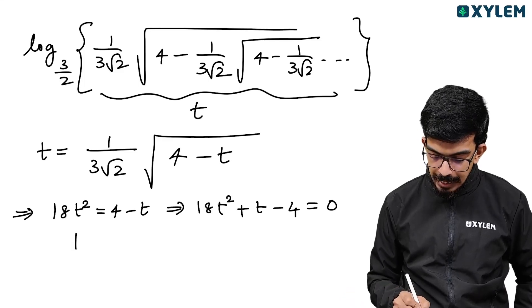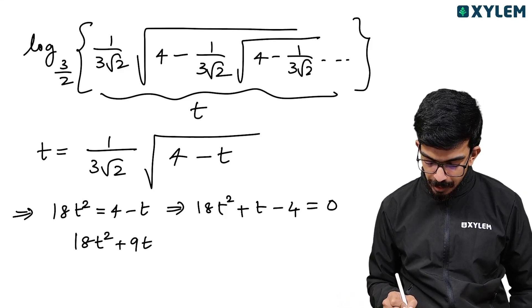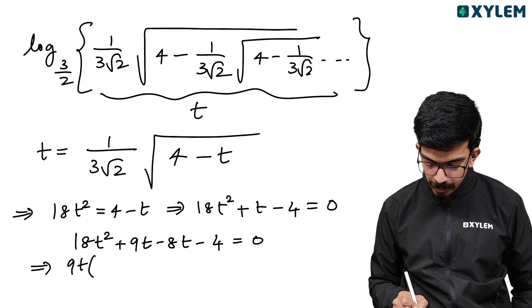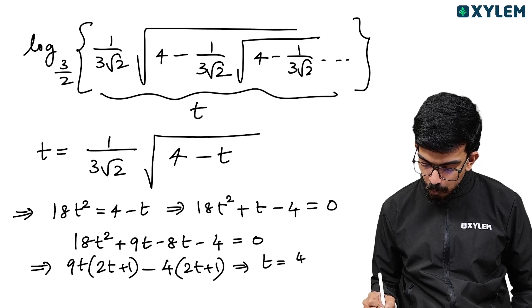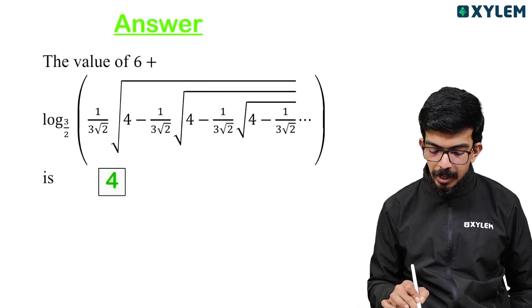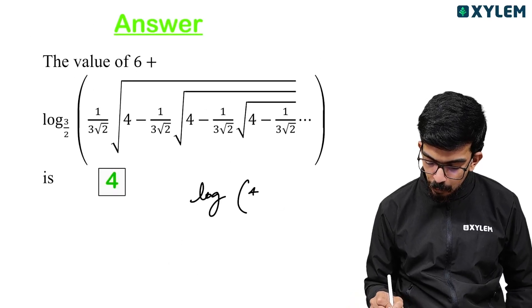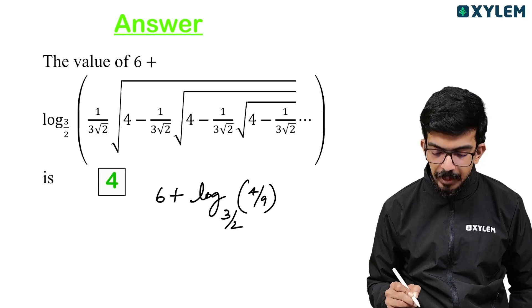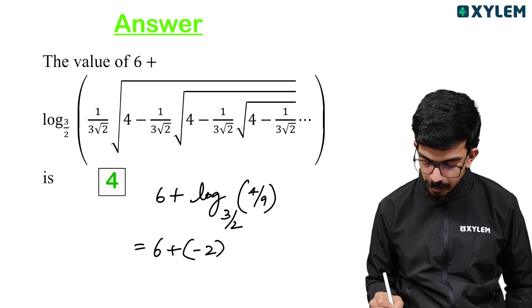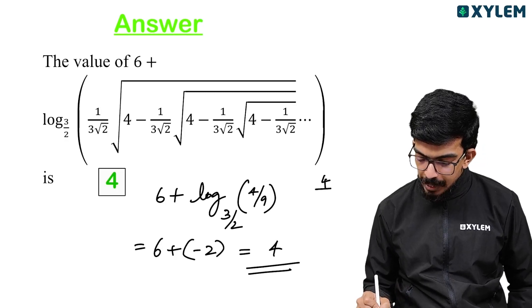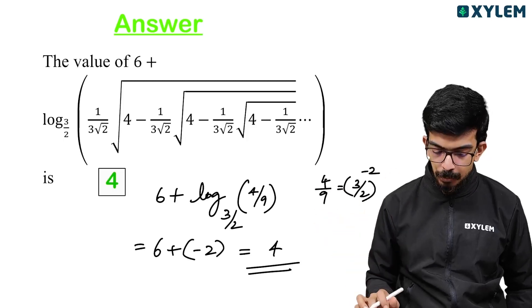Factorizing 18T² + T − 4 = 0: this gives (9T − 4)(2T + 1) = 0, so T = 4/9 or T = −1/2. Since T must be a positive number, we accept T = 4/9. Then the answer is log base (3/2) of (4/9). Since 4/9 = (2/3)² = (3/2)^(−2), the answer is −2.